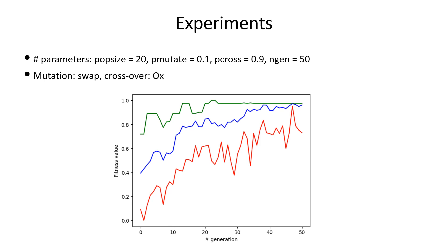For graph size n equals 20, population size 20, probability of mutation 0.1, and crossover probability 0.9, number of generations 15, which is the number of iterations we are running the genetic algorithm. Here the mutation method used is swap and crossover method is order crossover OX. Note that the maximum fitness value is close to 1.